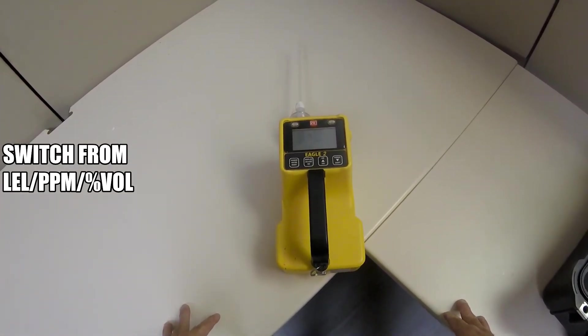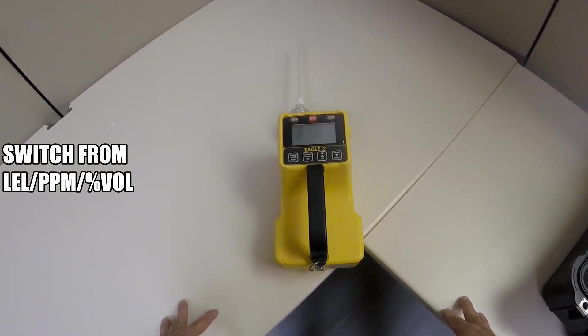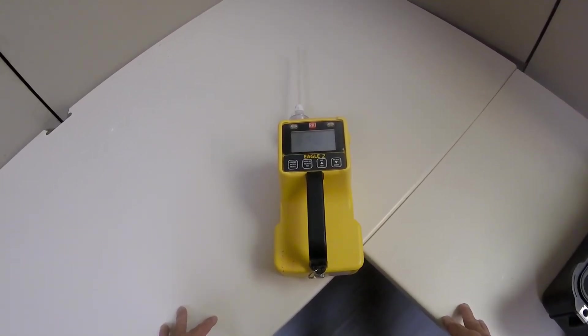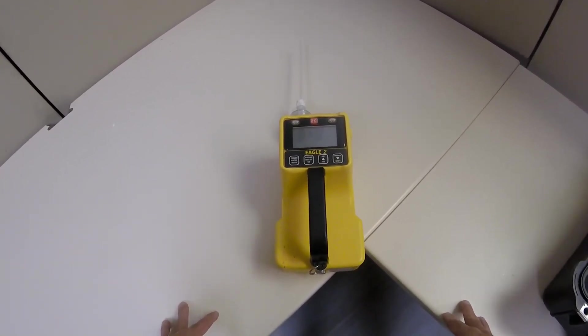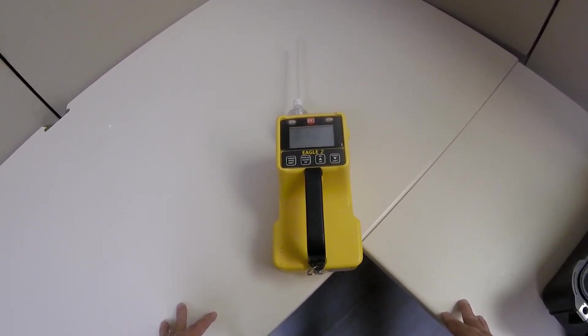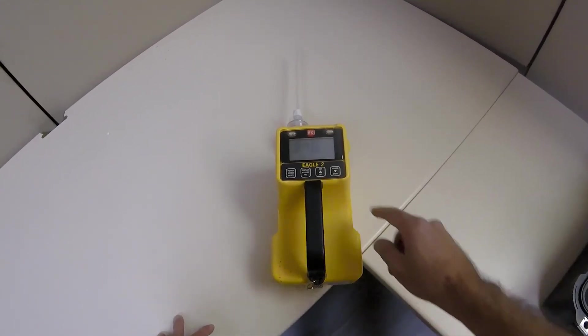Switching from LEL to parts per million to percent volume: The catalytic combustion channel units can be changed from percent LEL to PPM to percent volume. While in normal operation, press and release the range shift button until the desired unit appears.